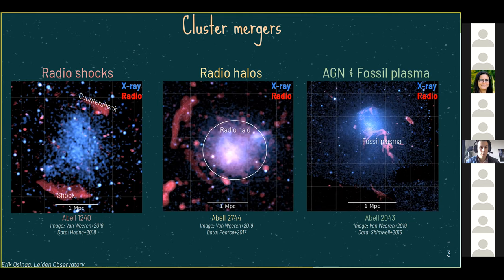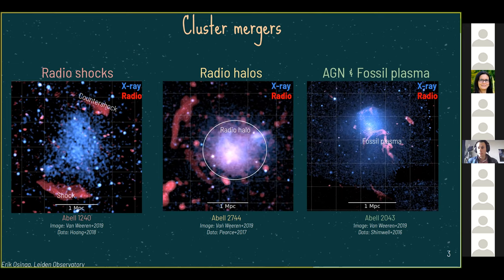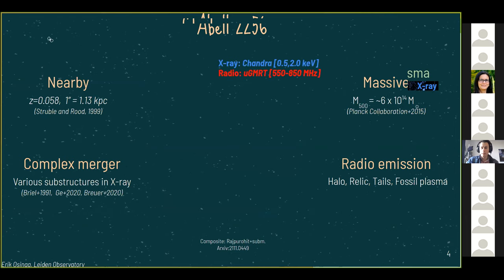What can we observe during cluster mergers? We can categorize this into three broad categories: radio shocks (also called radio relics) — collimated structures tracing shocks in the intracluster medium where particles are being accelerated, usually found on the outskirts of clusters; radio halos — large diffuse extended sources up to megaparsec sizes tracing turbulent regions in the cluster center; and tailed AGN, including head-tail galaxies and dead AGN whose fossil plasma is being re-accelerated by the turbulent cluster medium.